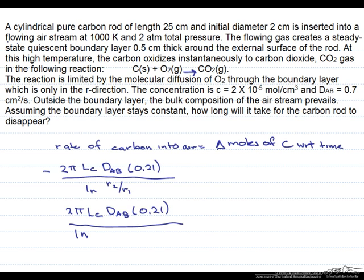Now the radii are not staying constant. So r2 is the radius of the carbon rod plus this boundary layer thickness. And r1 is that radius of the carbon rod. And remember that's going to be changing because that's going to be disappearing.